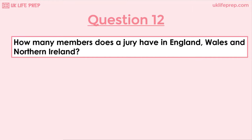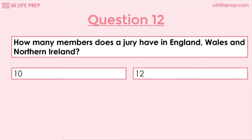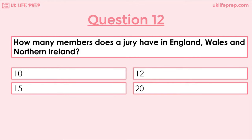Question 12: How many members does a jury have in England, Wales and Northern Ireland? 10, 12, 15 or 20? The correct answer is 12. In Scotland, they have 15 on the jury.